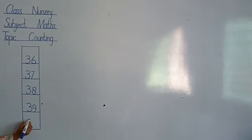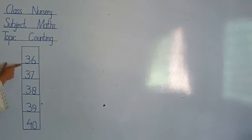40, 40, 40, 40. The next number after 39 is 40. 40, 40, 40. The first number is 36, 37, 38, 39, 40, 40.